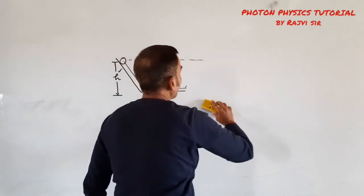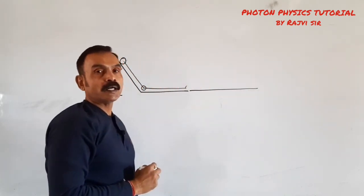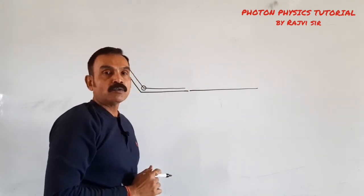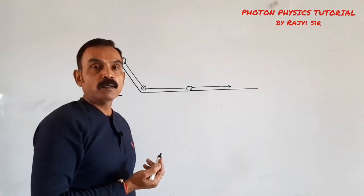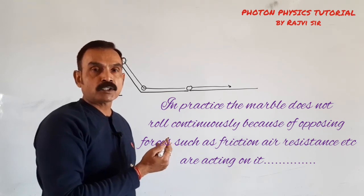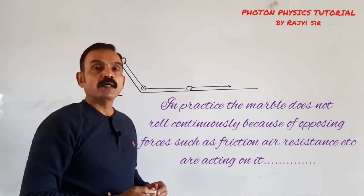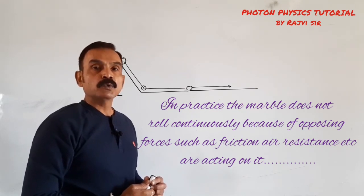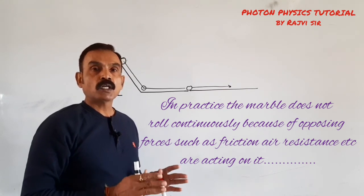Phir isi ke basis pe Galileo ne kya kiya — jo third plank tha, uske inclination ko zero kar diya, usko bhi horizontal kar diya, aur same height se usko release kiya. To jis tarah se wo us height ko attain karke hi ruk rahi thi, theoretically hum yahan par keh sakte hain ki yeh ball lagaatar chalti rahegi. So theoretically, for continuous motion, continuous force is not required. In experiments ke basis par Galileo ne law of inertia diya — according to which, if the body is at rest, it will remain at rest until and unless acted by an external agency, that is force. And if the body is in motion, it will continue to move in a straight line with the same speed, until and unless acted by an external agency, that is force. This is called the law of inertia.